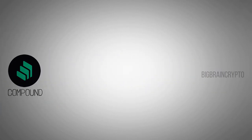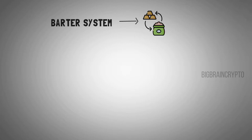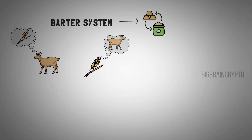Let's travel back in time. The earliest recorded form of trade is called the barter system, where you trade one good or service in return for another good or service. For example, imagine you have a goat and you need grains. Somebody has grains and needs a goat. You both exchange your goods. It seems fair, right?